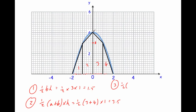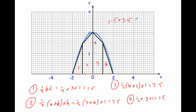Trapezium three: half × (4 + 3) × 1 = 3.5 again. Triangle four: half × 3 × 1 = 1.5. Adding all four areas together: 1.5 + 3.5 + 3.5 + 1.5 = 10. So the area is 10 units squared. Since there are no real-world measurements on this xy-axis, we write the answer as 10 units squared.